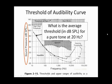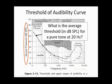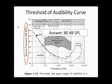Question: what is the average threshold in dB SPL for a pure tone at 20 hertz? Note that this is a logarithmic scale, so the spacing is logarithmic: 10 hertz, 20, 30, 40, 50, 60, 70, 80, 90, 100, then 200, 300, 1,000, 2,000, 10,000, 20,000 hertz. Looking at 20 hertz on the chart, the answer is 80 dB SPL.